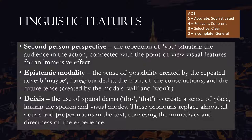The text uses epistemic modality — that modality linked to senses of possibility — achieved through the repeated adverb 'maybe', which is foregrounded at the front of these constructions, and the future tense created by modal verbs 'will' and 'won't'. The text also uses deixis — spatial deixis — with 'this' and 'that' creating a sense of place. The deixis connects the spoken and visual aspects of the text, making it a key feature in the multimodality.